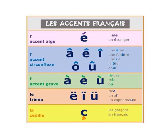The first accent is l'accent aigu. The E with accent aigu is pronounced as 'ay'. For example, l'été — you can see where it is used. Next is l'accent circonflexe. You can place it on the vowels A, E, I, O, U — you can see that sign, the circumflex, placed on those vowels.